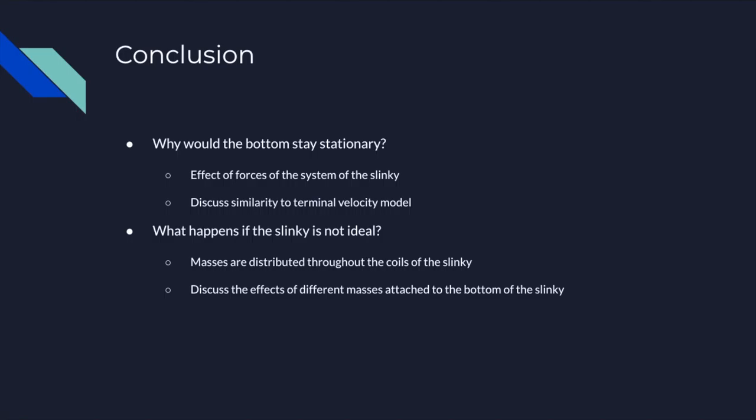What happens if the slinky is not ideal? You have to assume mass is distributed evenly throughout the coils. But if the mass is uneven with variations within the slinky, there's more complexity with spring forces. The spring force may not be as great, the center of mass may accelerate more, and the bottom of the slinky may start moving earlier because gravity wouldn't only be affecting the center of mass — it may end up being lower than the middle of the slinky.